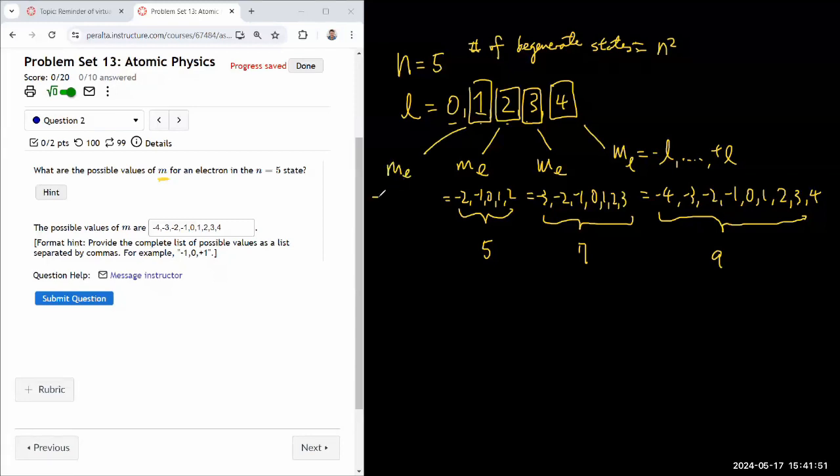But it's small enough. I can just do the addition. Here it's minus 1, 0, plus 1. And with this state, the only possible value is 0. So this is 3. This has count of 1. 1 plus 3 plus 5, 9 so far, plus 9, 18, plus 7, 25.